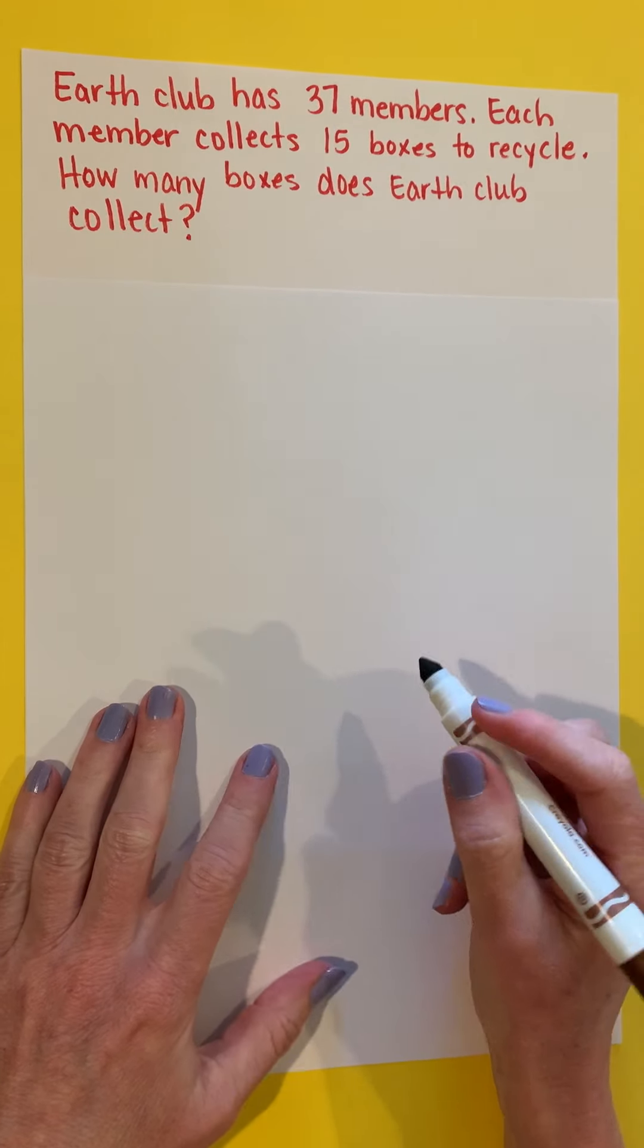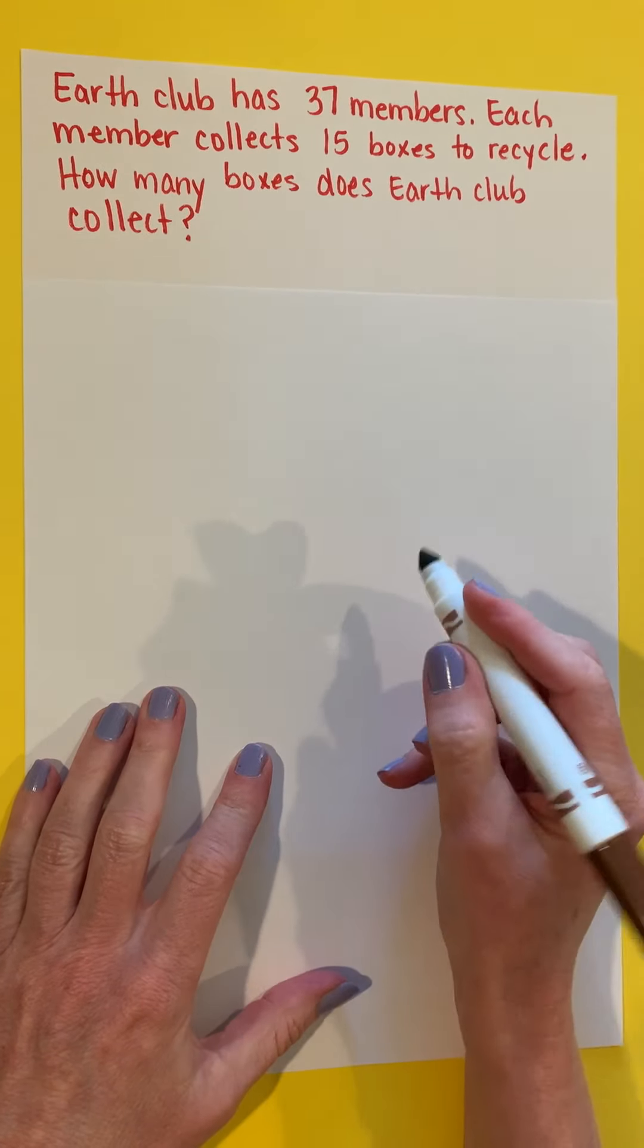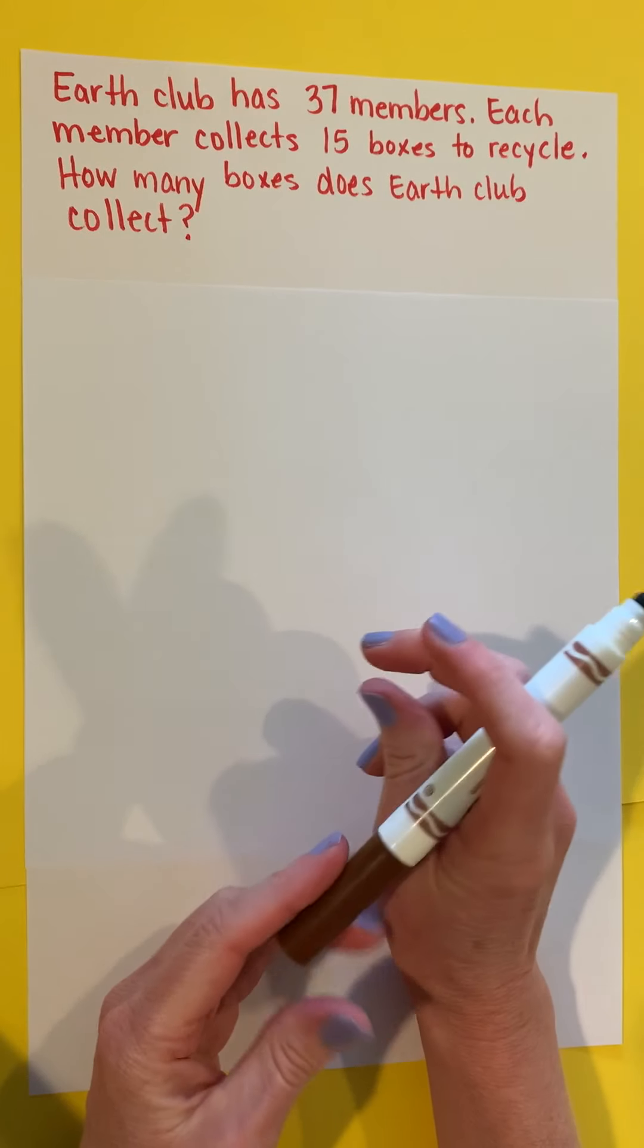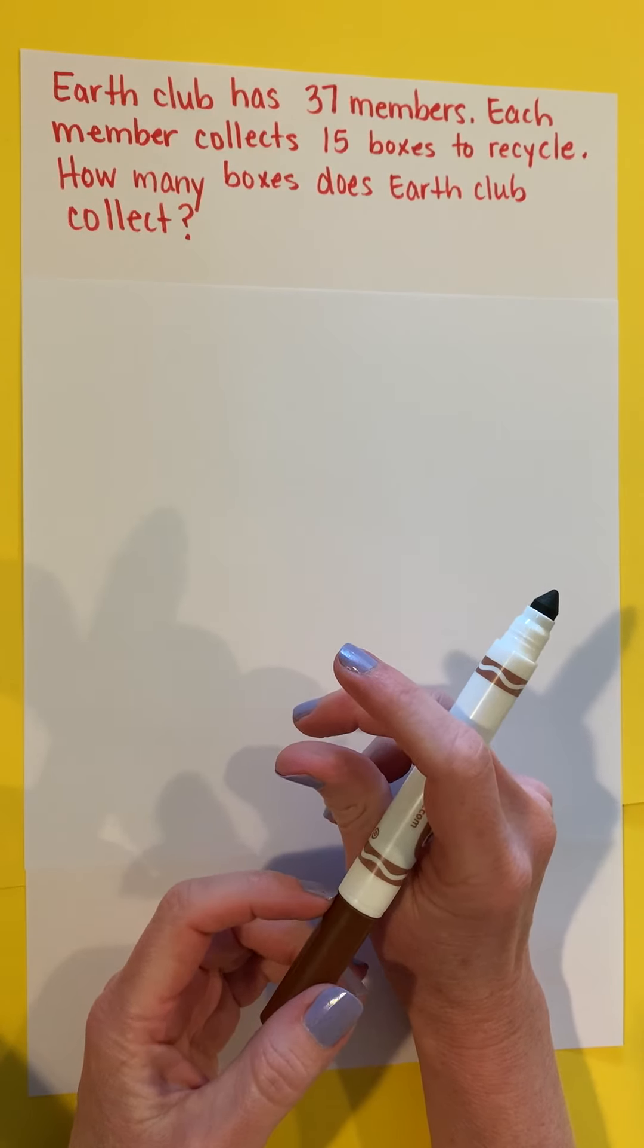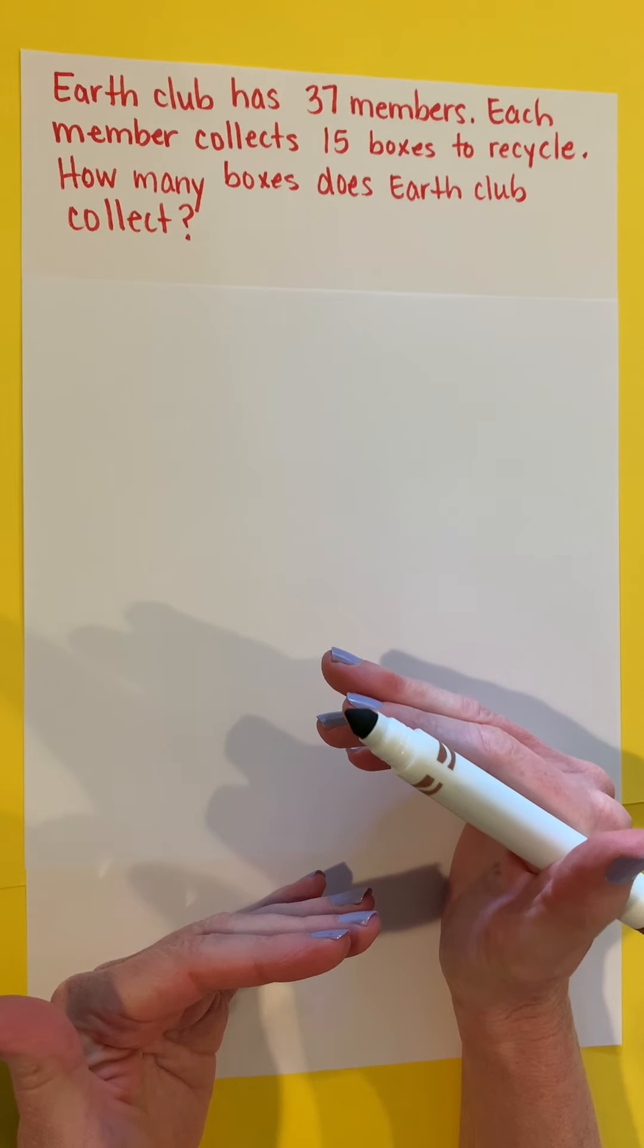I'm going to start off with my thinking model, my bar model. I know that there are 37 members and each of them collects 15 boxes, so I've got a bunch of parts there.